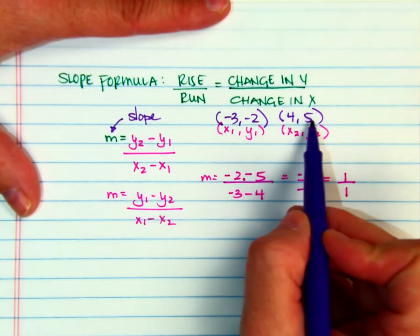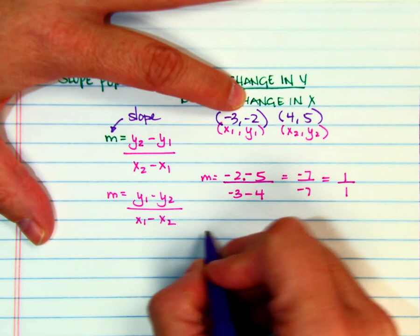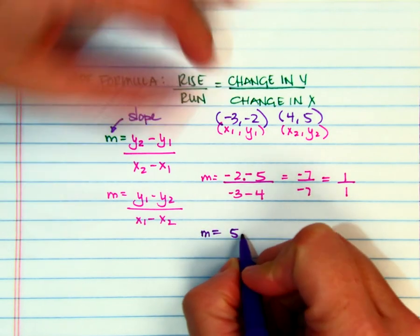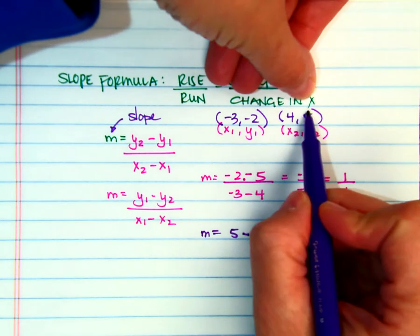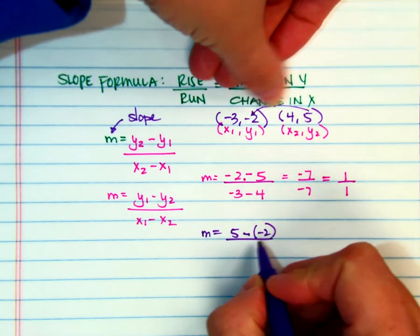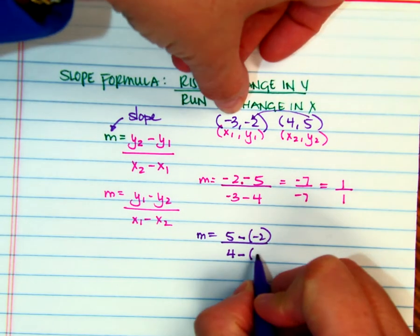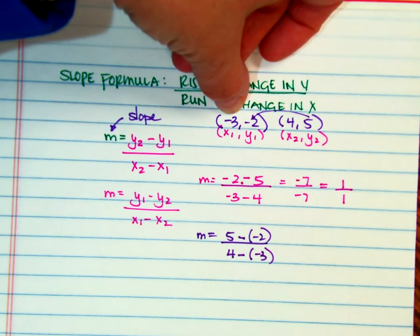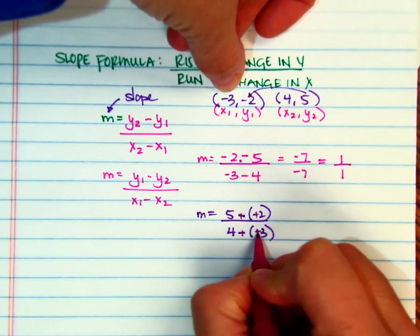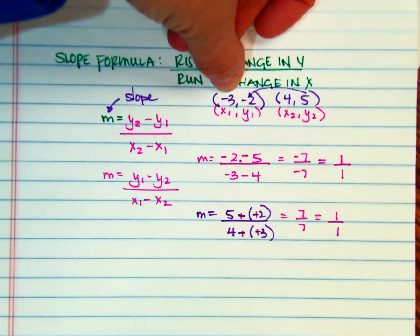So if I do it the other way and go 5 minus and go my y sub 2's first, it's still going to end up being the same. 5 minus is part of the formula, a negative 2, over 4 minus is part of the formula, a negative 3. Remember that minus a negative is plus a positive. And we're right back to 7 over 7, which gives you 1 over 1.